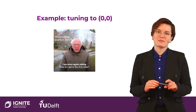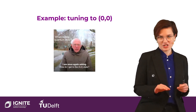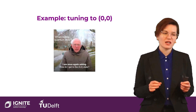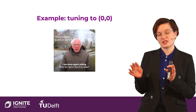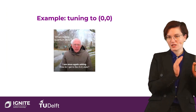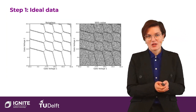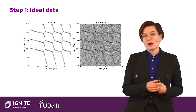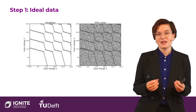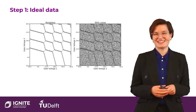Let us consider a super simple example where we are just taking our first steps using a neural network. The only thing we want is to start in a random place in a charge stability diagram and move ourselves automatically to state (0,0) — zero electrons in the right dot and zero electrons in the left dot — with as little measurements as possible. The first step is to have our ideal measured or simulated data.